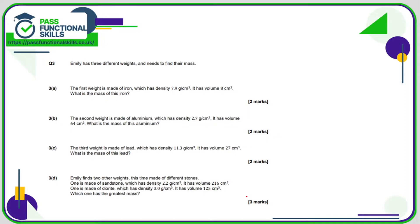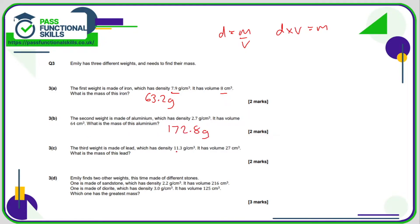Question number three. Emily has three different weights and needs to find their mass. The first weight is made of iron - density times volume gives the mass, so 8 times 7.9 is 63.2 grams. Next, 2.7 multiplied by 64 comes to 172.8 grams. Then 11.3 multiplied by 27 comes to 305.1 grams.